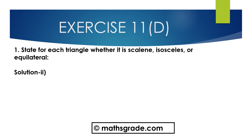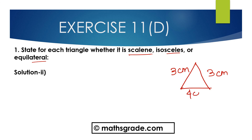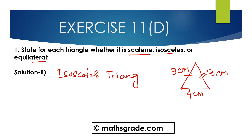Now Question No. 2: State which triangle is scalene, isosceles, or equilateral. First, draw the given figure. This triangle is given with sides 3 cm, 3 cm, and 4 cm. In this triangle, two sides are equal, that is 3 cm. We know any triangle whose two sides are equal is said to be an isosceles triangle. So this is an isosceles triangle.